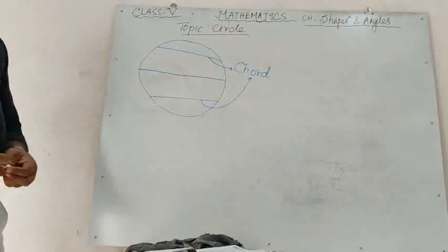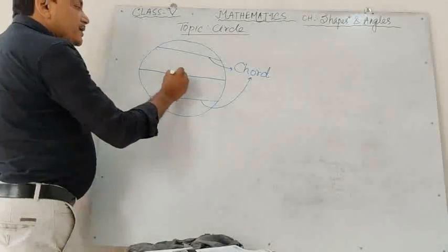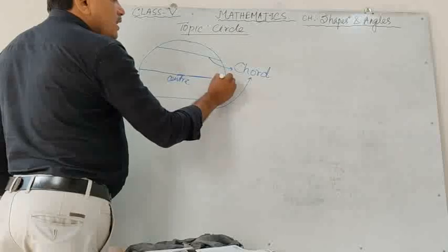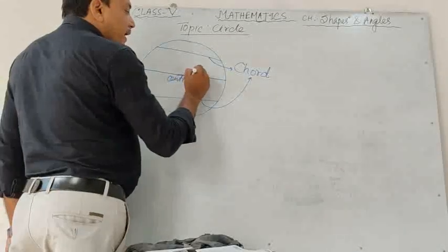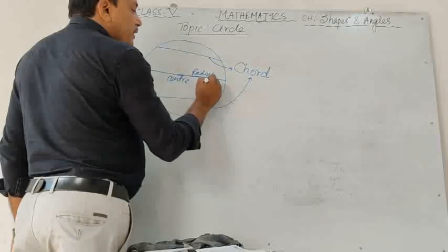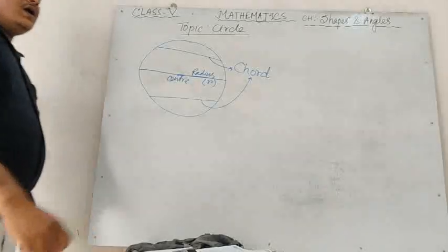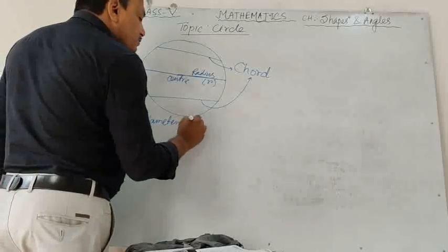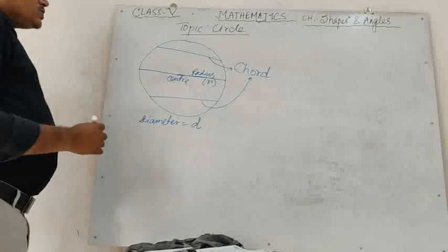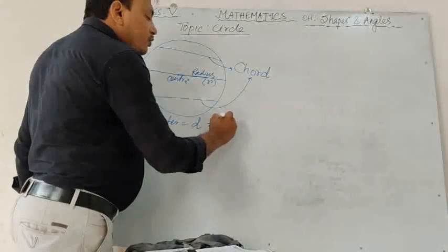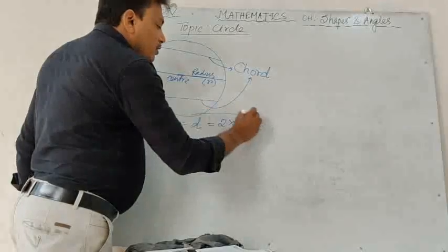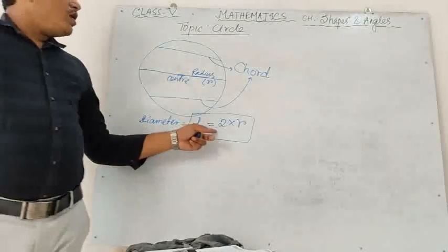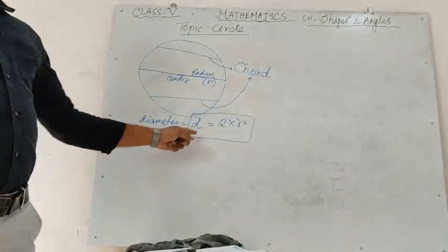These are the different parts of the circle. The fixed point is called the center. The distance from the center to any point on the circle is called the radius. We denote radius by small r, and diameter by small d. So the relation is: d equals 2r.